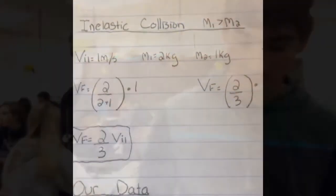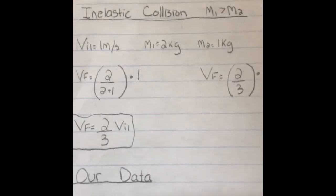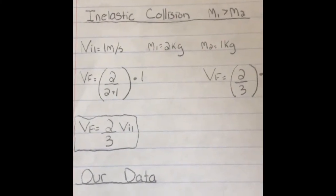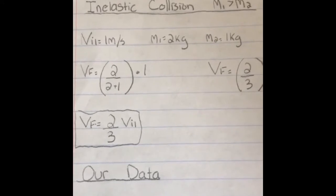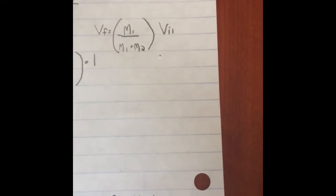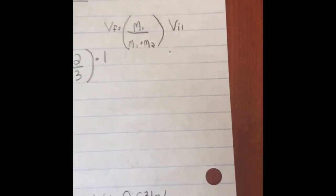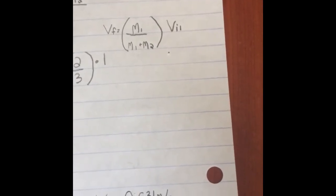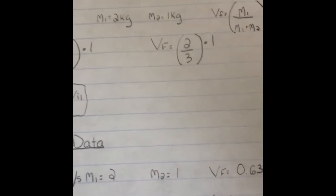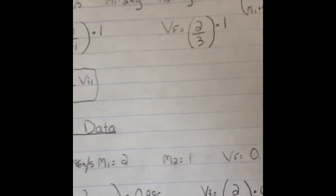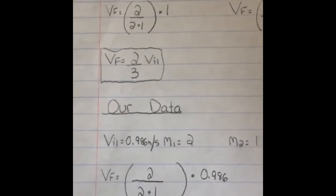And here is the work for those results. In this inelastic collision, M1 is greater than M2. If we put it into simpler terms and we have the first mass being twice as great as the second mass, and we have our initial velocity of the first mass equaling 1, then we can plug it into the equation: final velocity equals the first mass divided by the first mass plus the second mass, times the initial velocity of the first mass. We ended up with the final velocity equaling two-thirds of the initial velocity of the first mass.